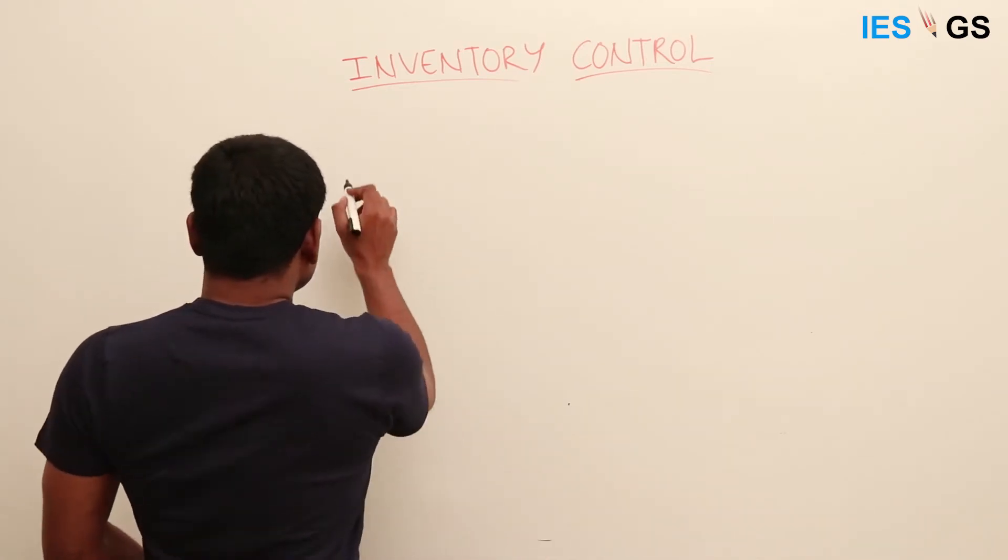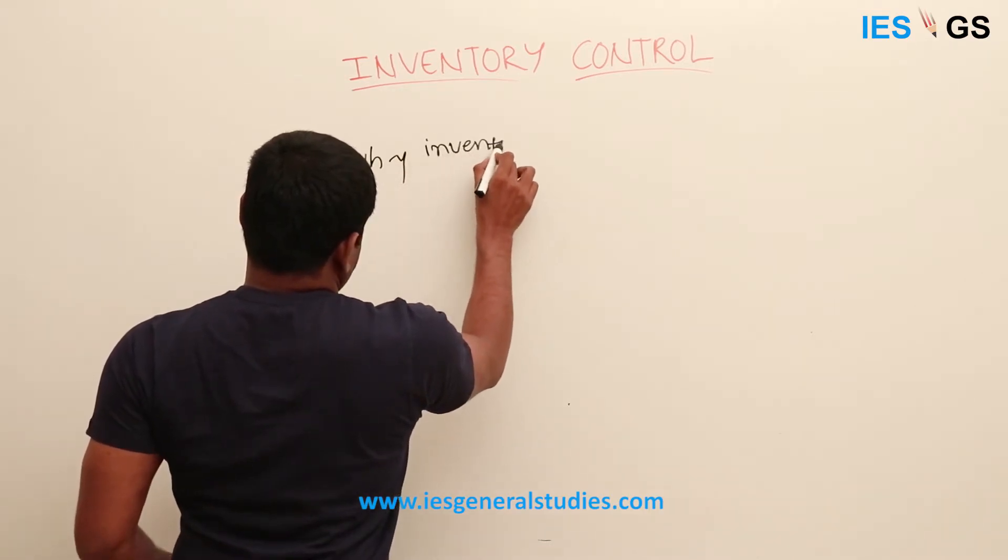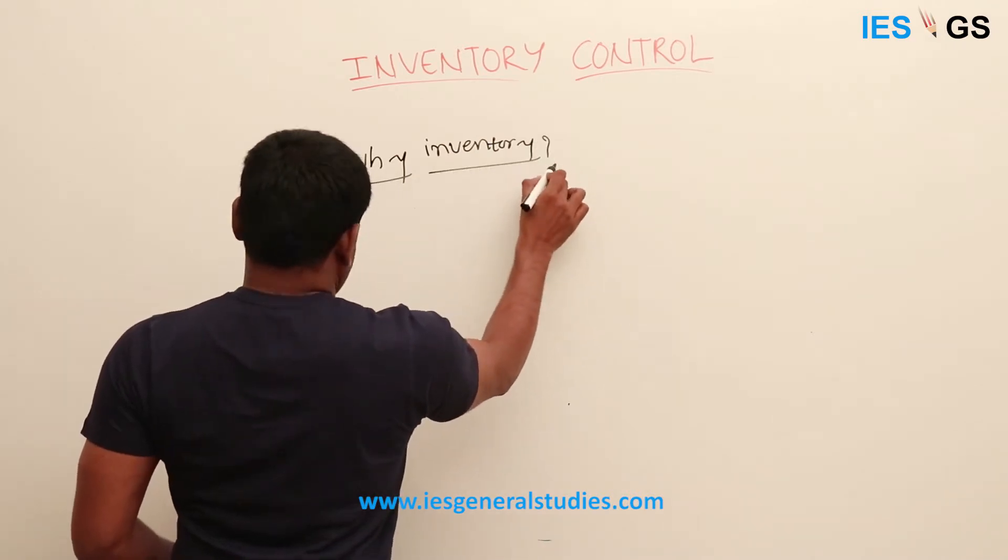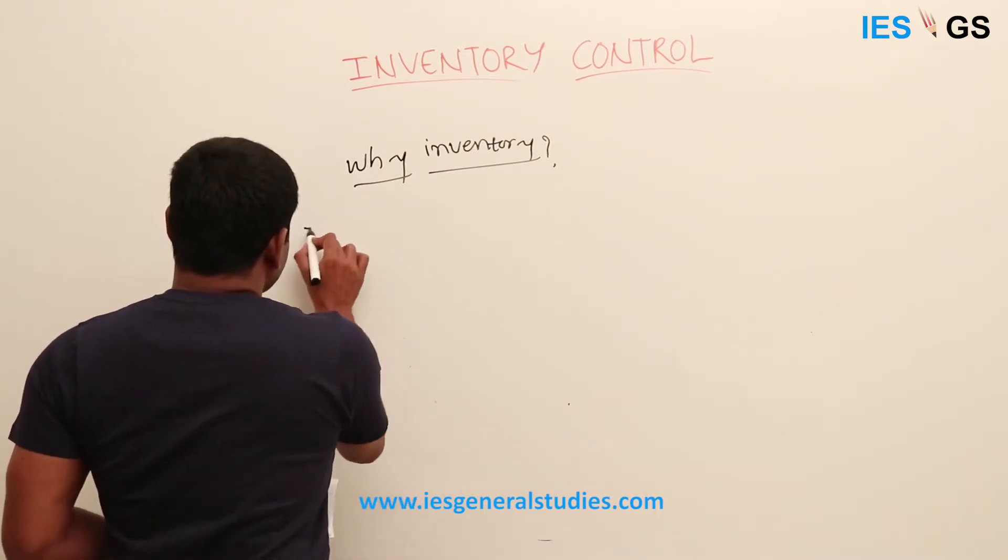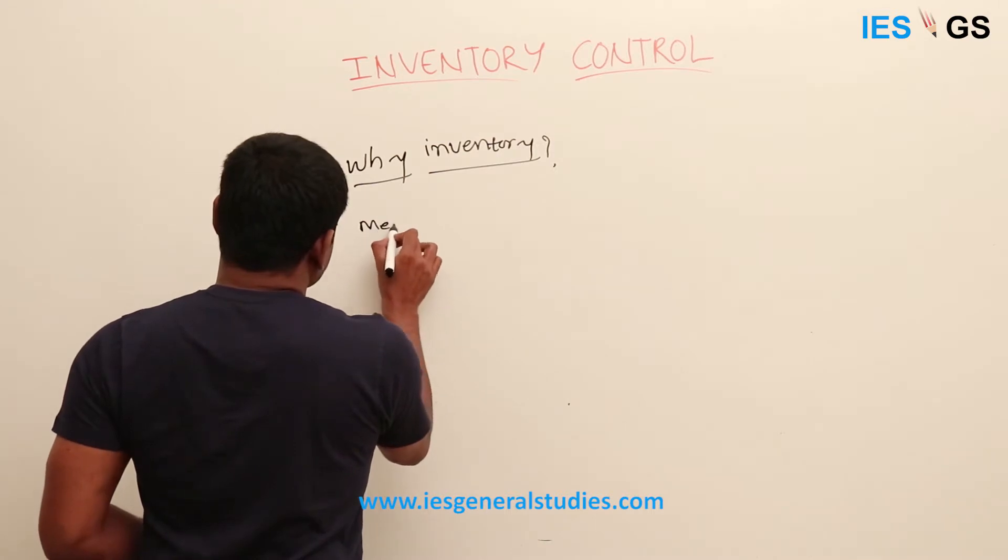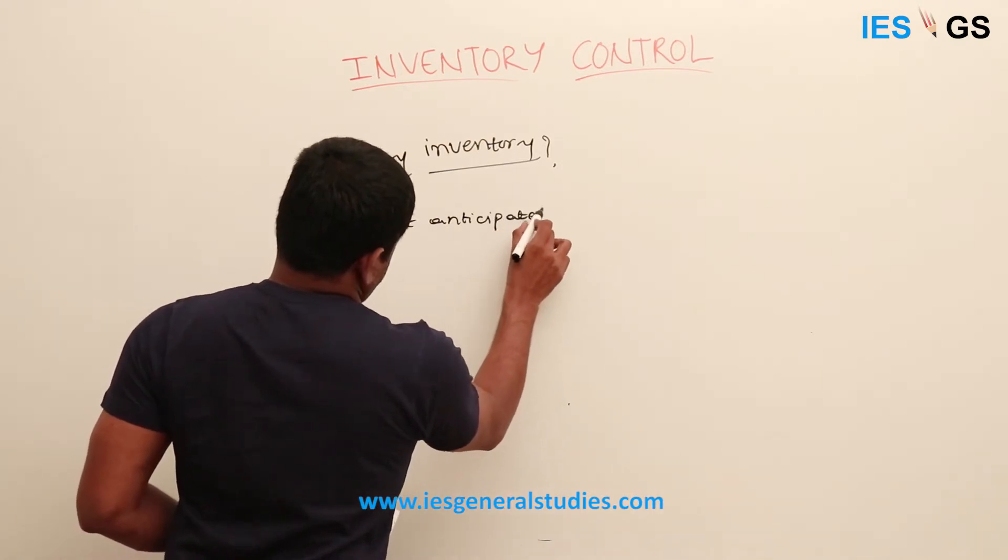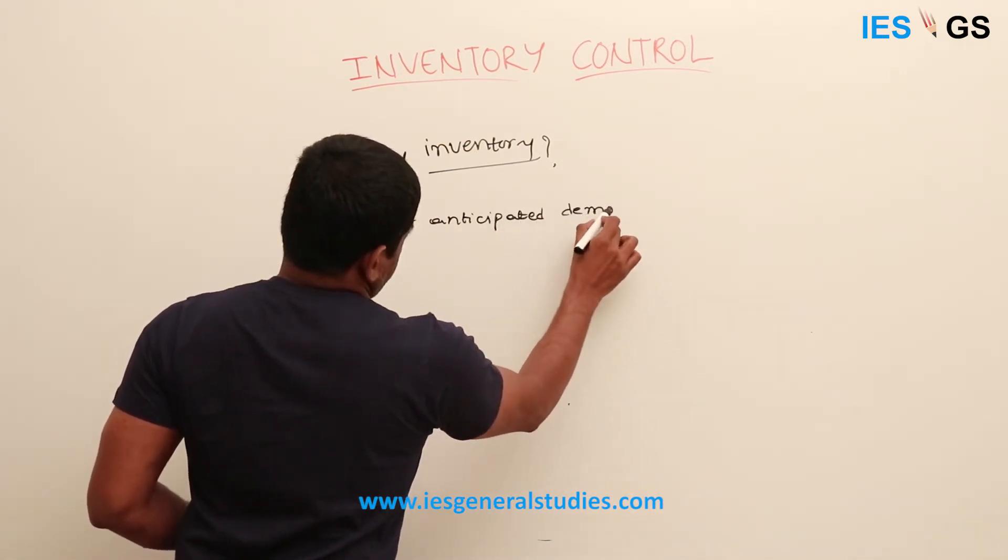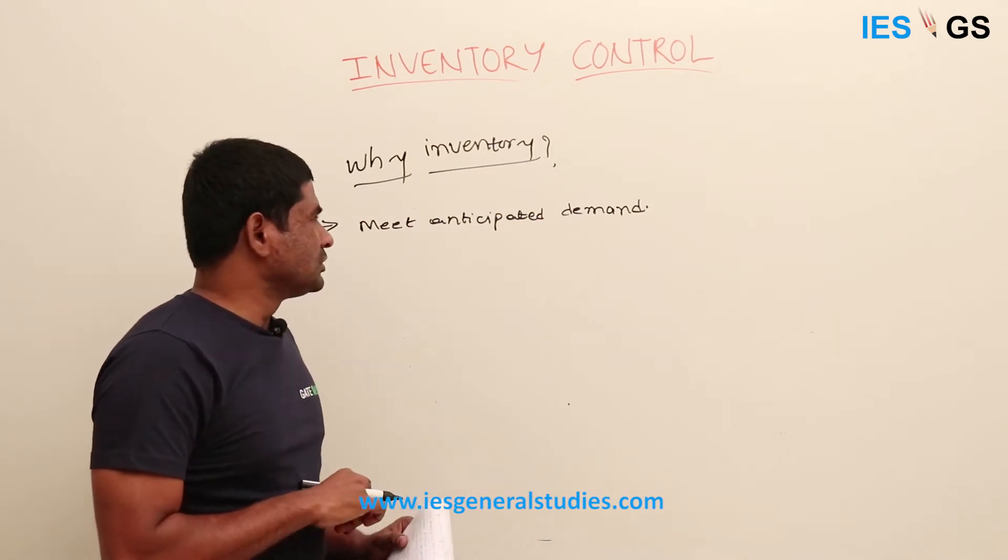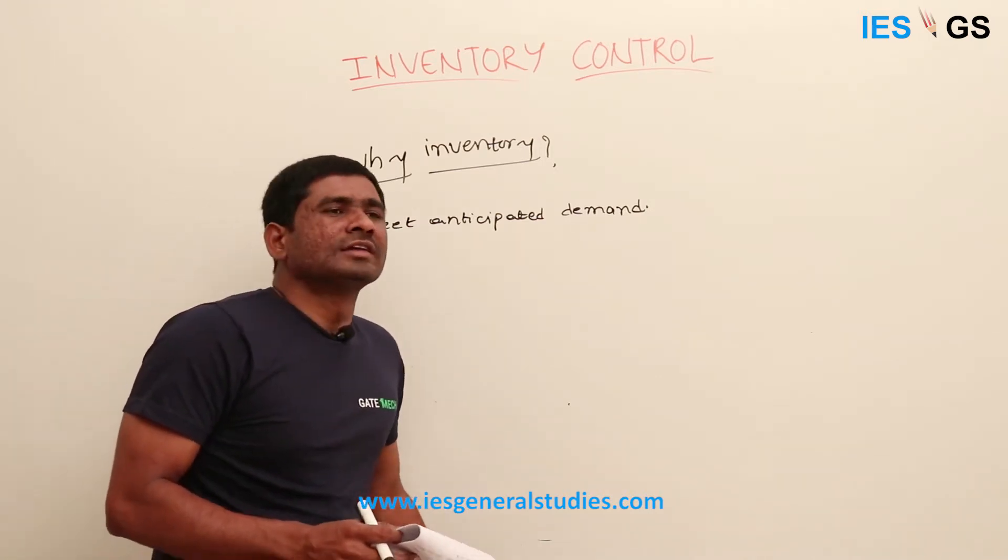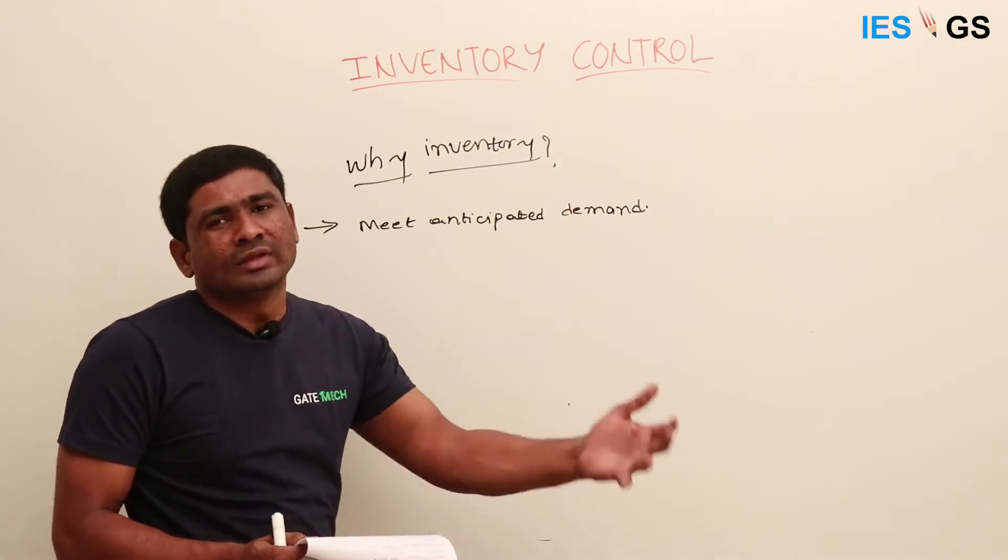Why is inventory needed? Inventory is needed to anticipate and meet anticipated demand. In most cases we can predict demand. For example, during festival seasons like Christmas, Sankranti, or Holi, people generally have a tendency to buy new things.